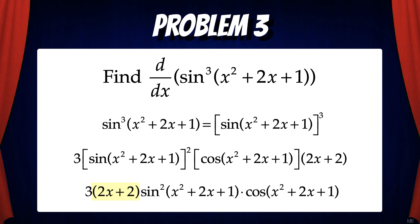Now let's clean this up. Moving the (2x+2) term to the front gives us 3 times the quantity (2x+2), multiplied by sine squared of (x²+2x+1) times cosine of (x²+2x+1). Note the squared on the sine function — I've moved that squared next to the sine itself because that's conventional notation for exponents on trig functions.